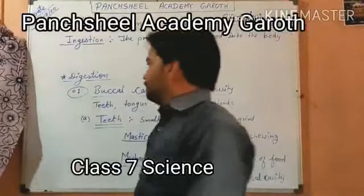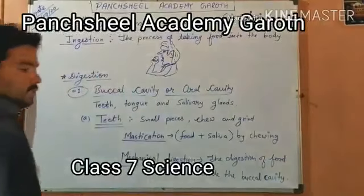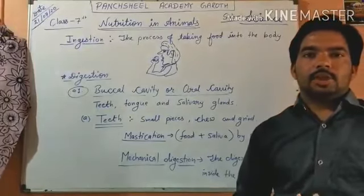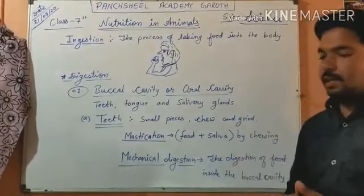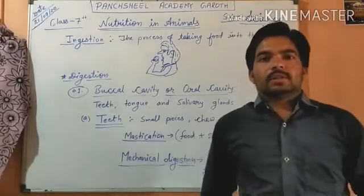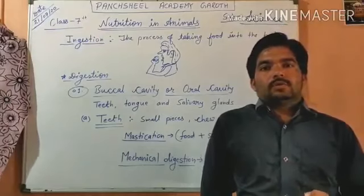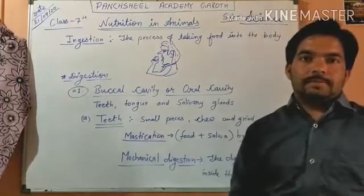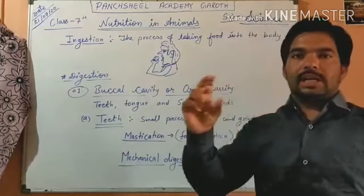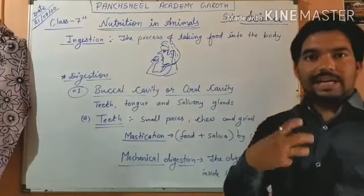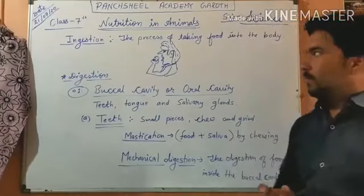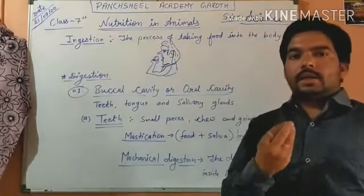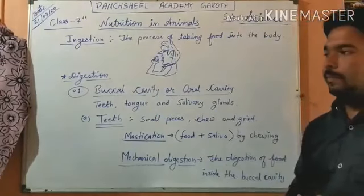Welcome students. In our previous lecture on science we discussed nutrition in animals, which is the second chapter. We discussed how animals get their food, and there are five main steps for digestion: first is ingestion, then digestion, assimilation, and so on. The first step, ingestion, is the process of taking food inside the body.